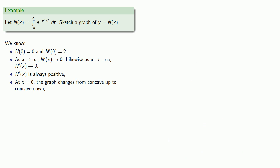So let's put all of these pieces together. First of all, we know that the graph goes through the origin, and the slope of the line tangent to the graph at that point is 2, so the tangent line looks something like this.